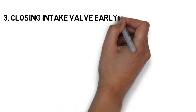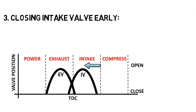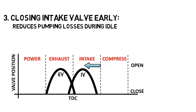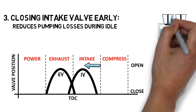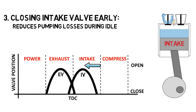Closing the intake valve early reduces pumping losses associated with low engine speed, low load conditions such as idle. During high vacuum, air fuel demand is low and work required to fill the cylinder is high. Therefore, when the cylinder has pulled enough air to keep the engine running, the valve can be closed to prevent unnecessary work.